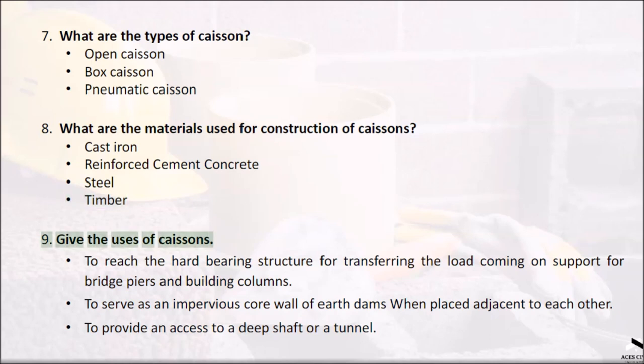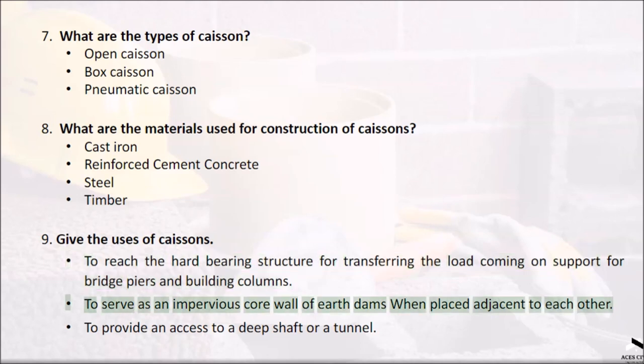Question 9: Give the uses of caissons. To reach the hard bearing structure for transferring the load coming on supports for bridge piers and building columns; to serve as an impervious core wall of earth dams when placed adjacent to each other; to provide access to a deep shaft or tunnel.